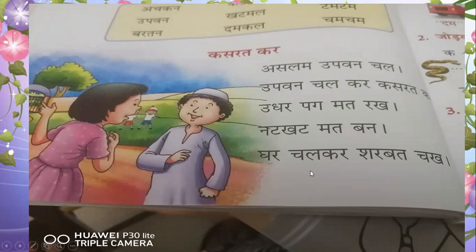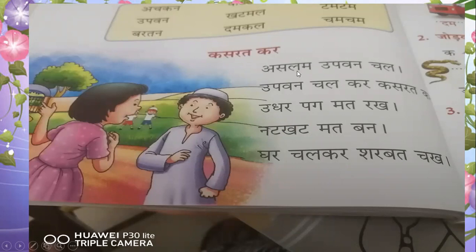Now we will do one small poem given in your textbook. We will read that poem. The name of the poem is Kasratkar — K-S-R-T-K-A-R. You can see the picture: one girl and one boy are there. That girl is telling something to that boy. We will read what she is telling him.